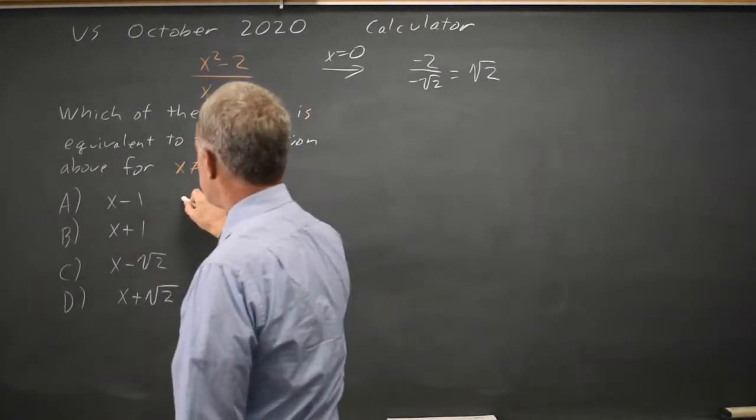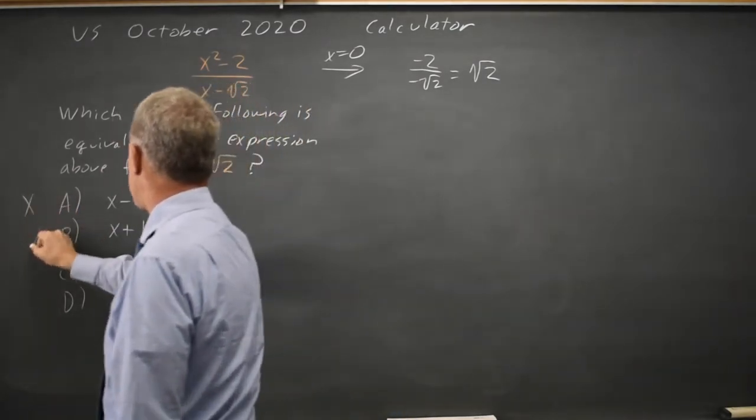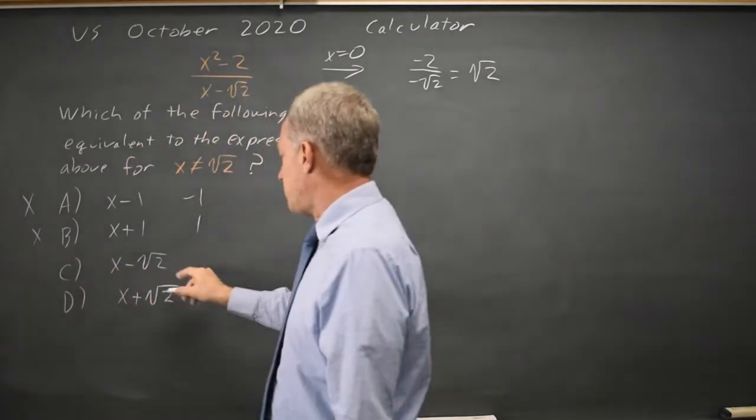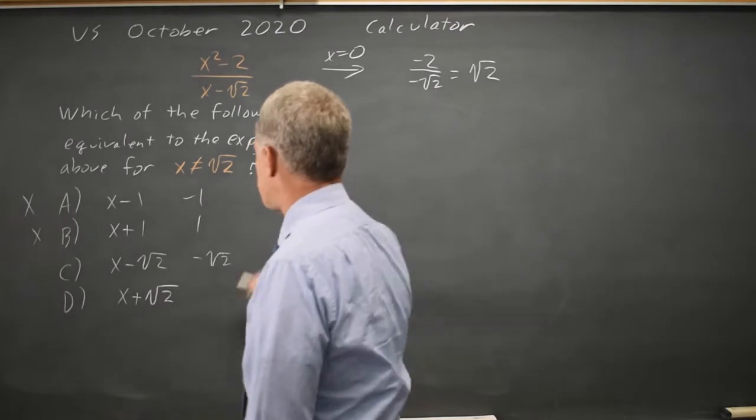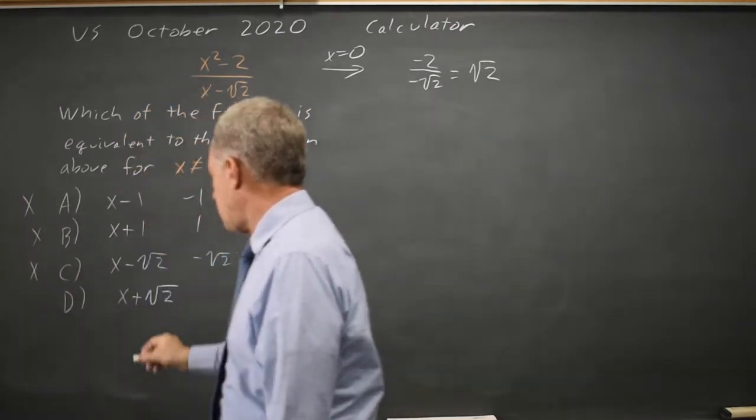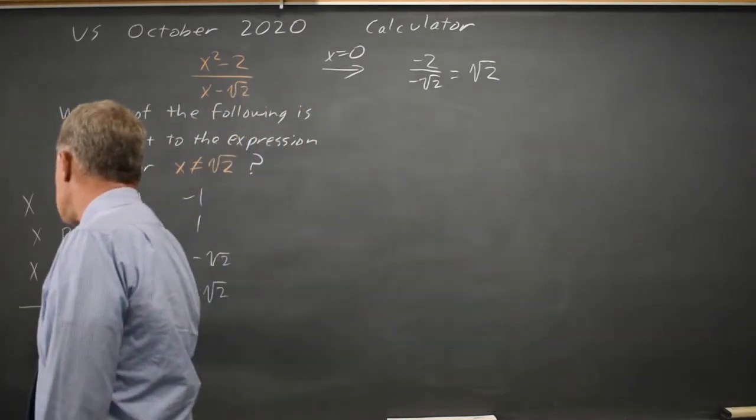At x equals 0, choice A is negative 1, which is not correct. Choice B is positive 1, which is not correct. Choice C is 0 minus negative root 2 is negative root 2, which is not correct. We wanted the positive. And 0 plus root 2 is positive root 2, so choice D is the correct answer.